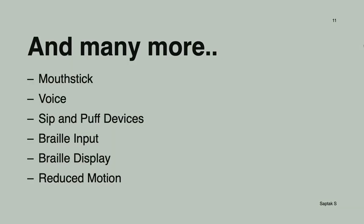There are many more interfaces as well — mouth stick, voice, sip-and-puff device, braille input and braille display, and reduced motion. People who suffer from different disabilities triggered by motion should be considered. If your website has a lot of animations, you should ensure there is a media query in CSS so that if they have opted in for reduced motion, you won't show any animation.